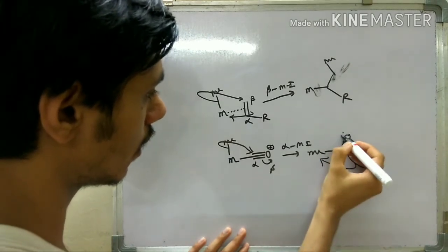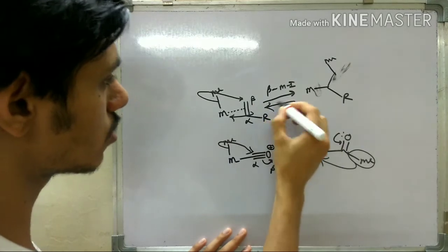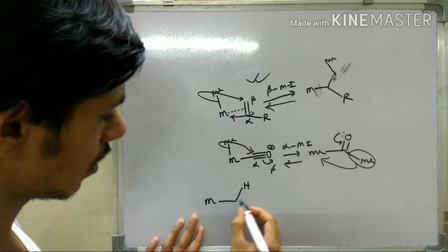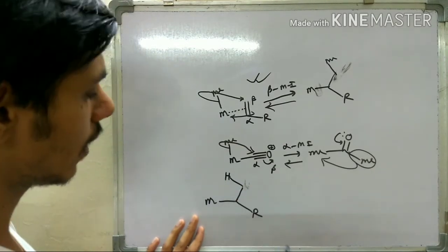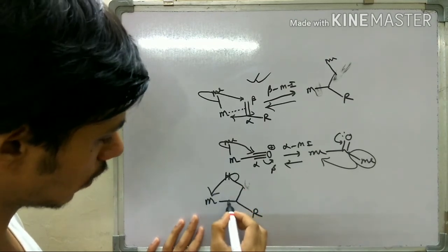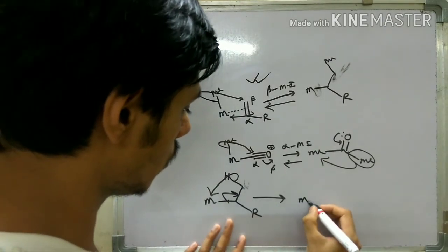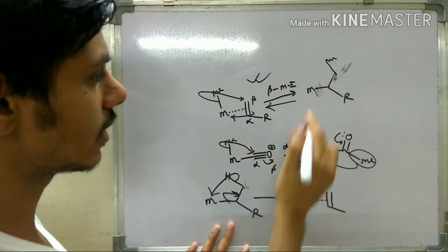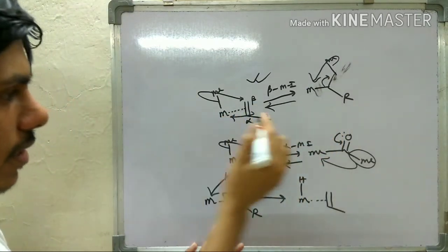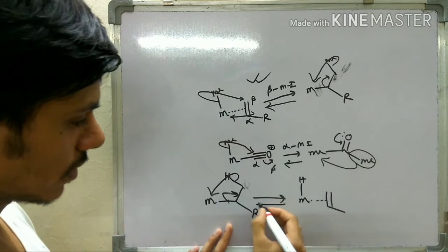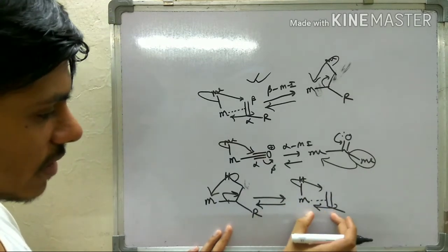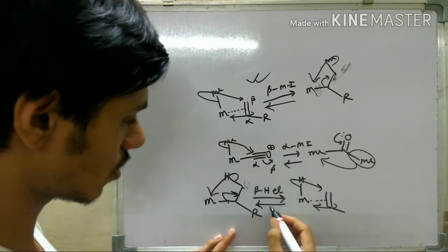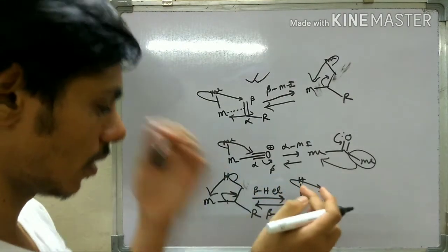The reversibility of the beta migratory insertion can be understood as follows: if you have a complex with a hydrogen and an R group, the hydride can go onto the metal and the bond reforms, giving you a hydride on the metal. This also works with a methyl group instead of hydrogen. So the forward reaction is called beta hydride elimination and the reverse reaction is called beta migratory insertion.